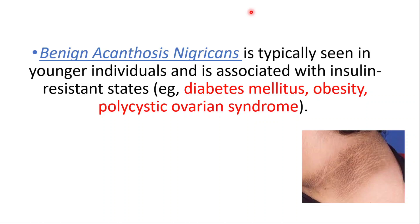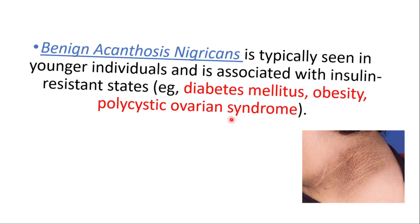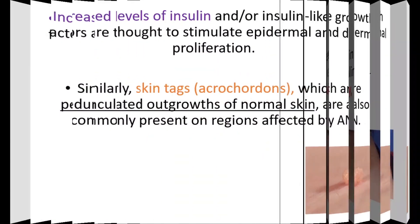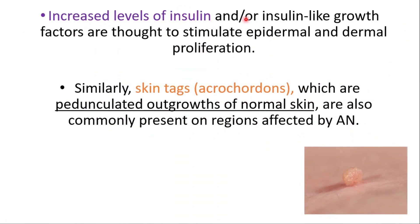Benign acanthosis nigricans is typically seen in younger individuals and is associated with insulin resistance states such as diabetes mellitus, obesity, and polycystic ovarian syndrome. Increased levels of insulin or insulin-like growth factors are thought to stimulate epidermal and dermal proliferation.